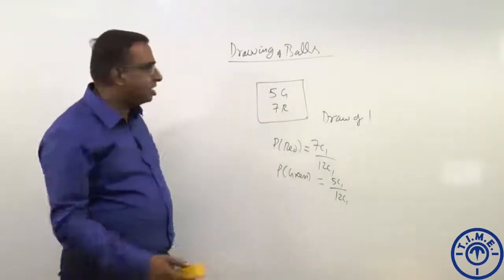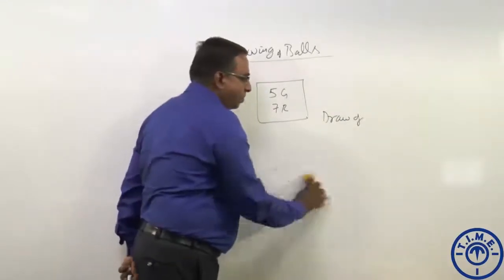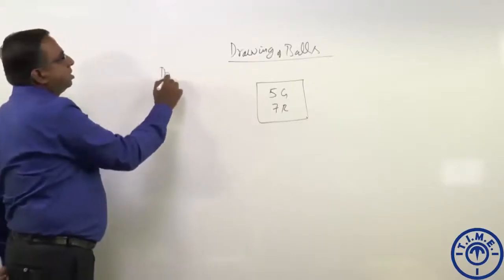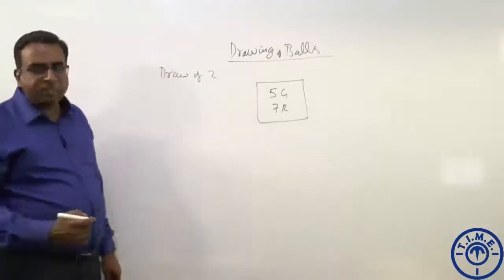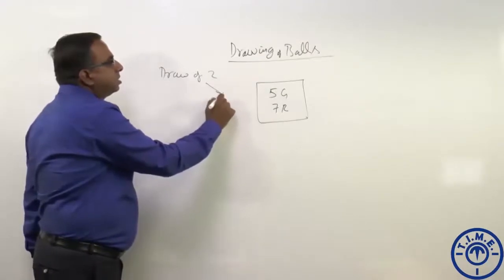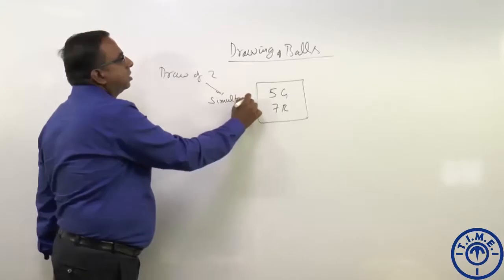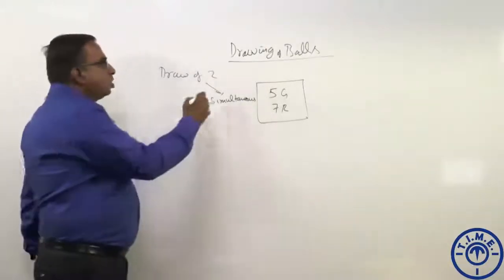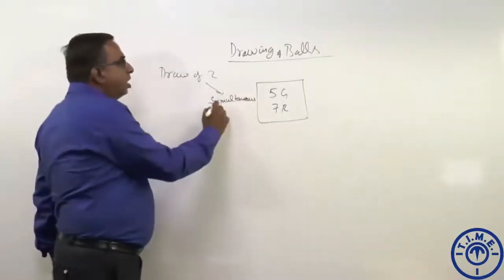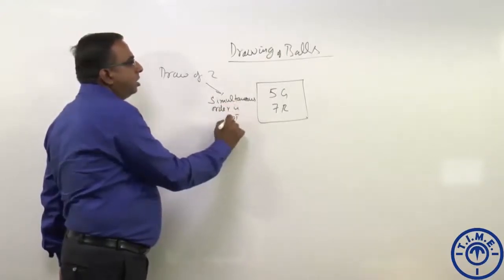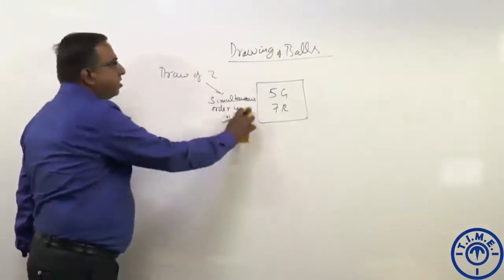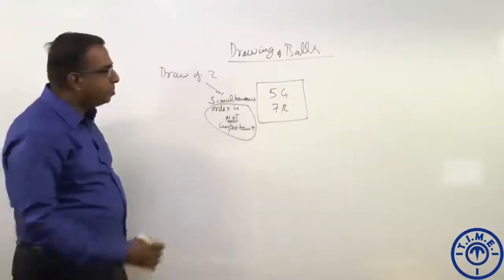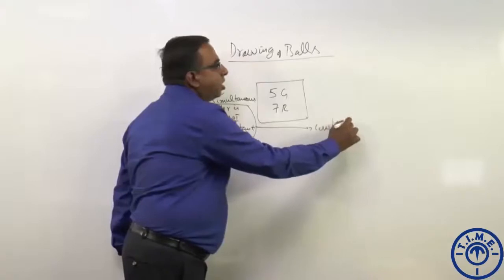Draw of 1 ball is not that interesting and not very difficult at all. However, let us take a case where we are going to look at draw of 2. There are two ways in which the draw of 2 can be done. One we call simultaneous draws — simultaneous means at a time, in a single go, you are going to pick both. So order is not important. When we are drawing the two balls simultaneously, order is not important, so it is combination.